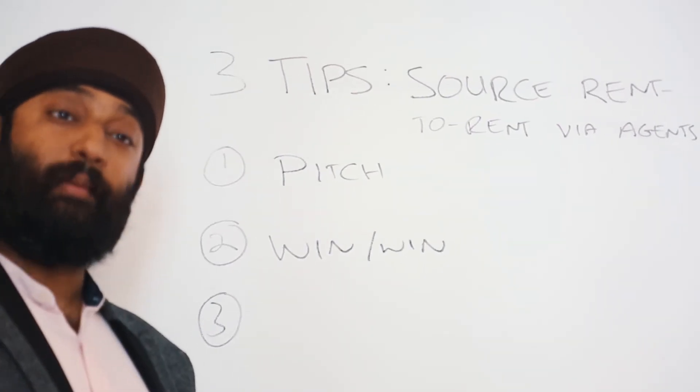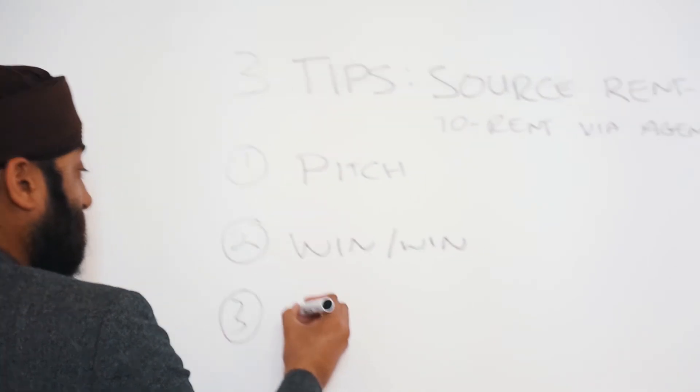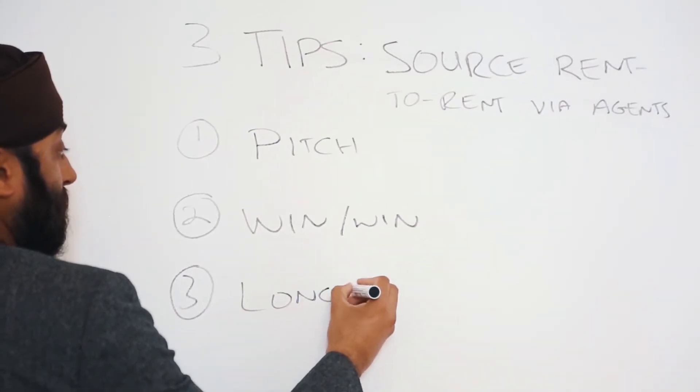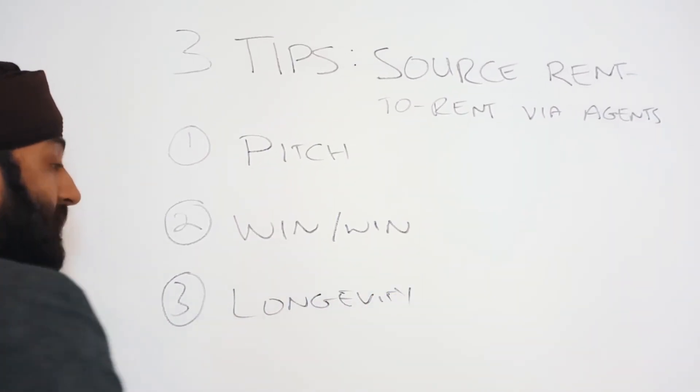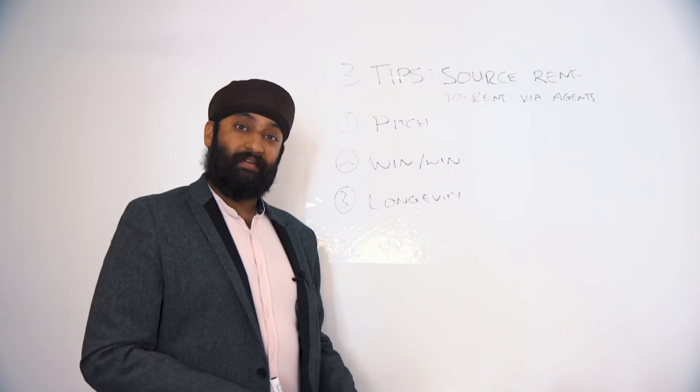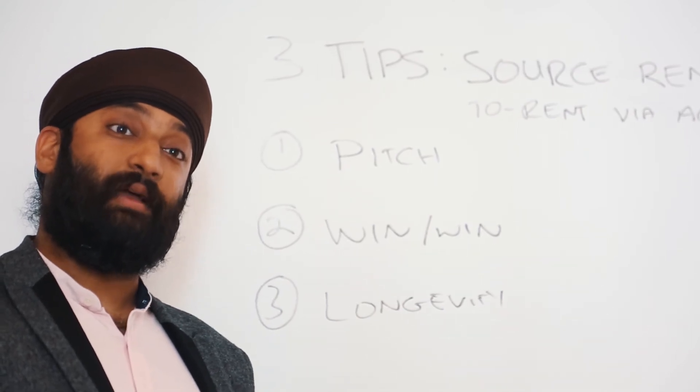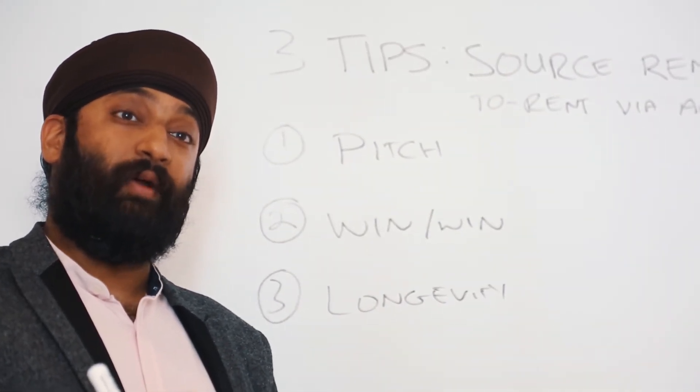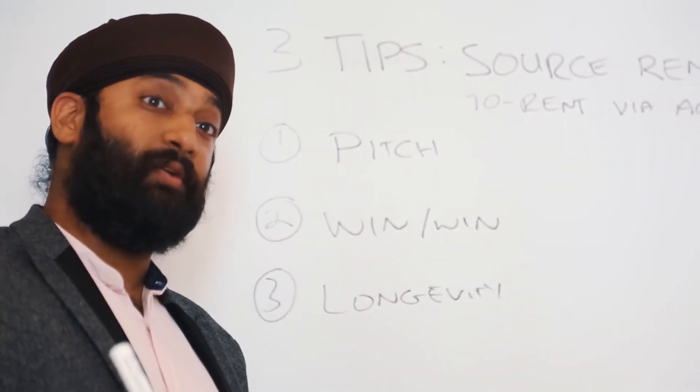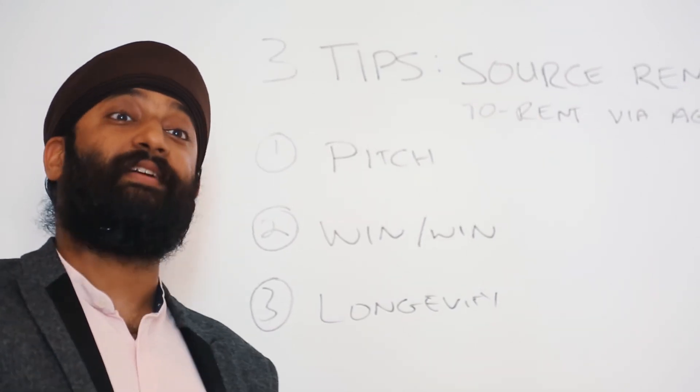Tip number three, tip number three is longevity. So what do I mean by longevity? Longevity is about business relationship with the agent. You want to establish a relationship with the agent where you'll offer them a solution where you'll be working with them for the next three to five years.